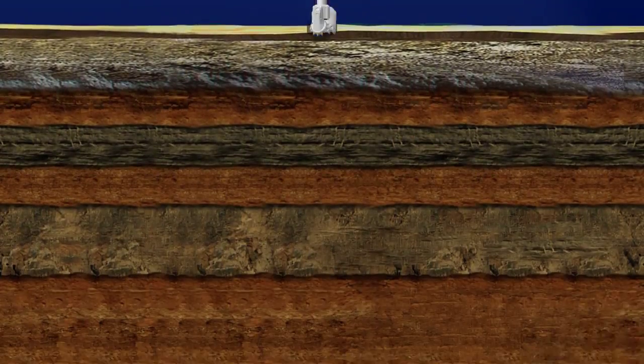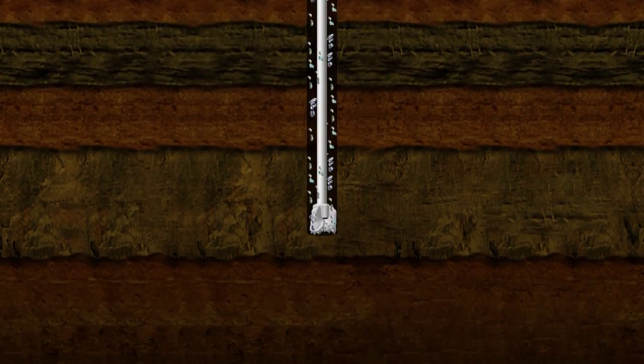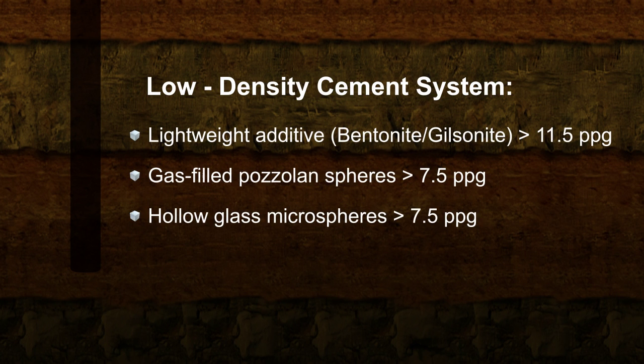Many wells are drilled in areas where weak zones cannot support a cement column of normal density. People use lightweight additives such as bentonite or pozzolan spheres and hollow glass microspheres to reduce the slurry density.